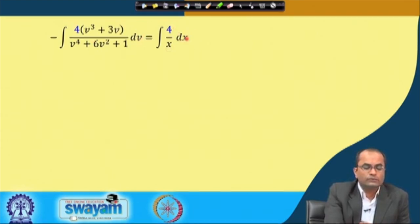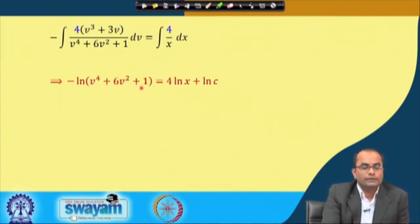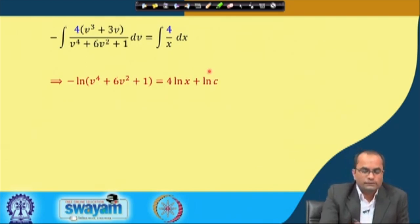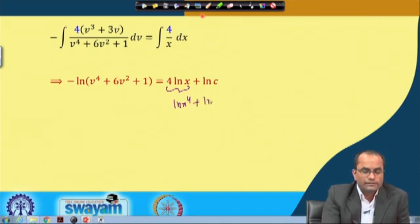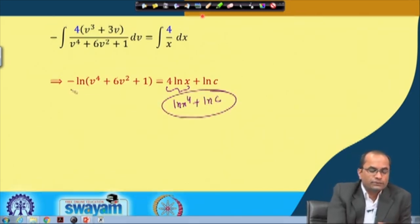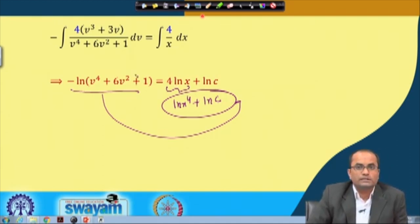We can easily integrate now. Because the numerator is the derivative of the denominator, the left side integrates as a logarithm: ln(v⁴ + 6v² + 1). The right side gives −4·ln(x) plus a constant of integration taken in logarithmic form as ln(c). So we have ln(v⁴ + 6v² + 1) = −4·ln(x) + ln(c), which we can rewrite as ln(v⁴ + 6v² + 1) = ln(c/x⁴). Combining all logarithmic terms: ln(cx⁴) + ln(v⁴ + 6v² + 1) = 0.